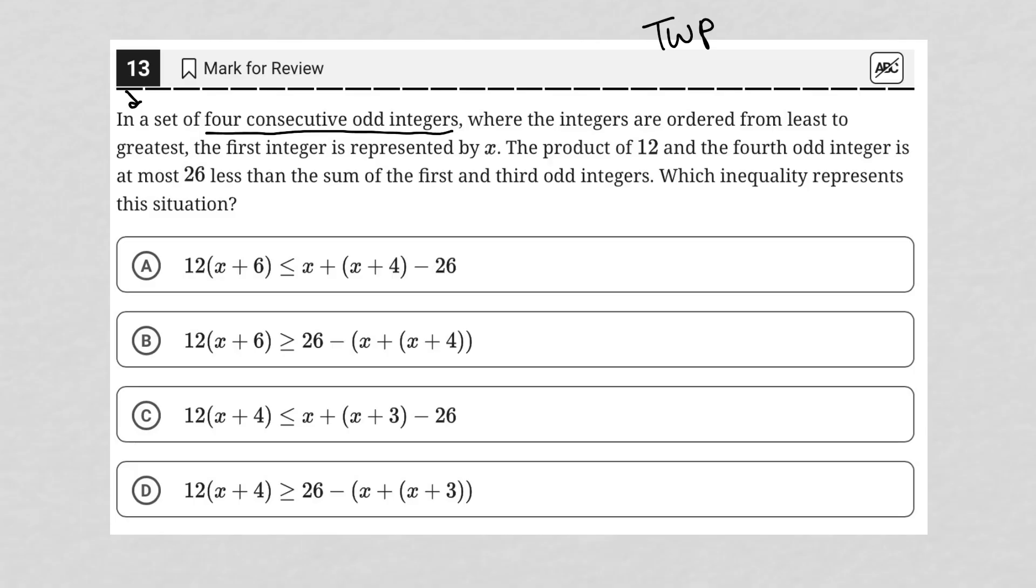So my understanding here is we have four consecutive odd integers. The first one is X. That means the second odd integer would be X plus two. The third odd integer would be X plus four. And the fourth odd integer would be X plus six. And you can test this out. If X were three, an odd number, then our next odd integer would be five, which is three plus two. The next one would be seven, which is three plus four and so on and so forth.